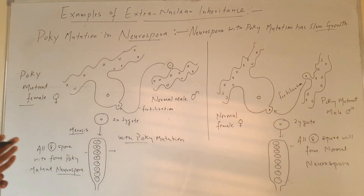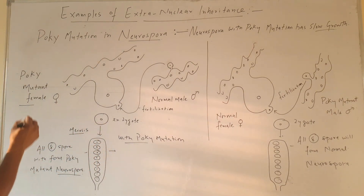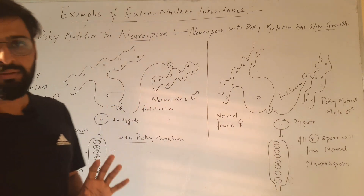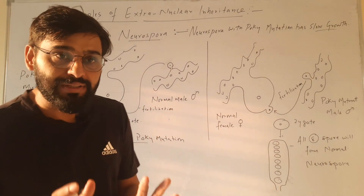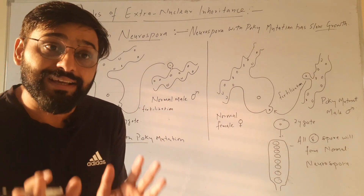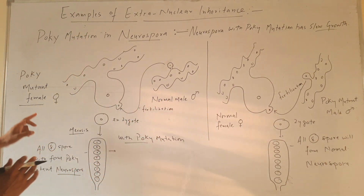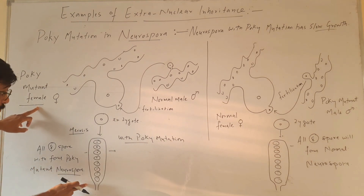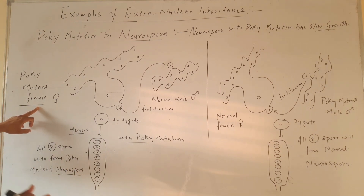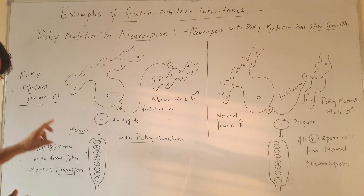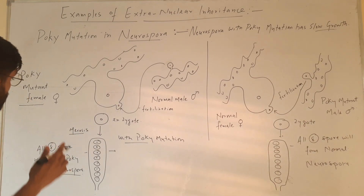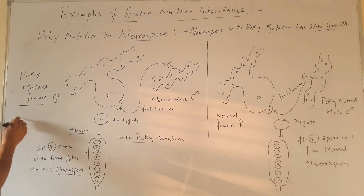Here you can see that the female has poky mutation and the male is normal. We can conclude that these spores acquired this mutation — they inherited this mutation from the mother.